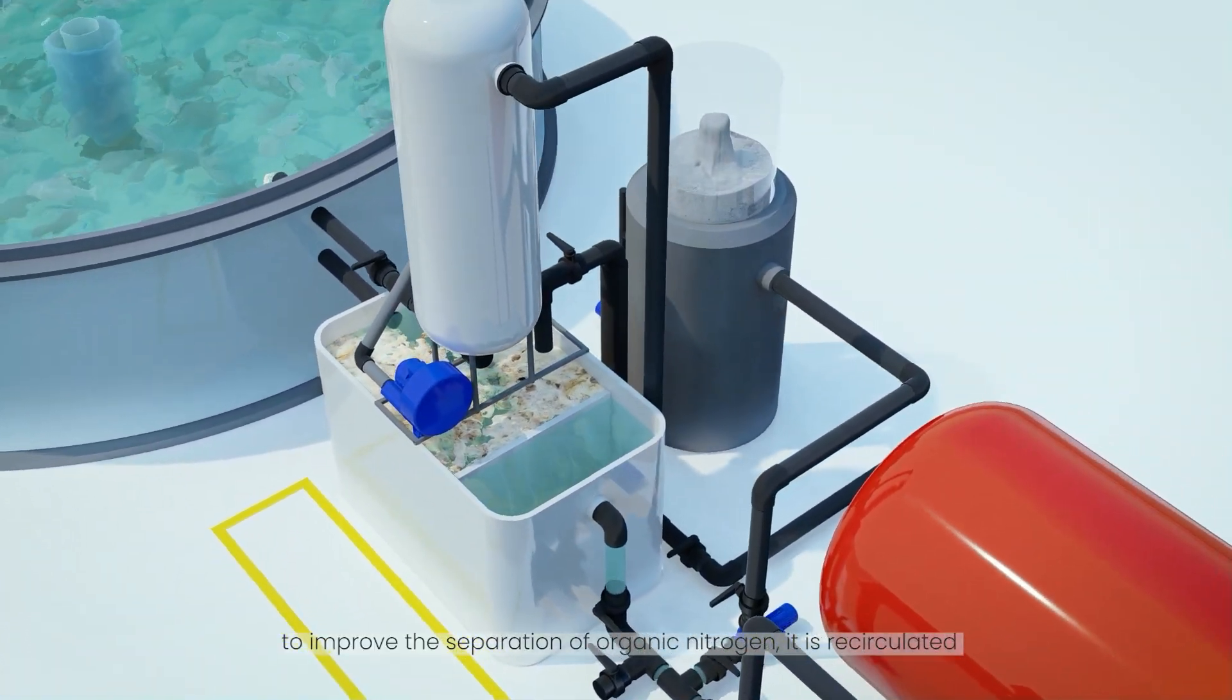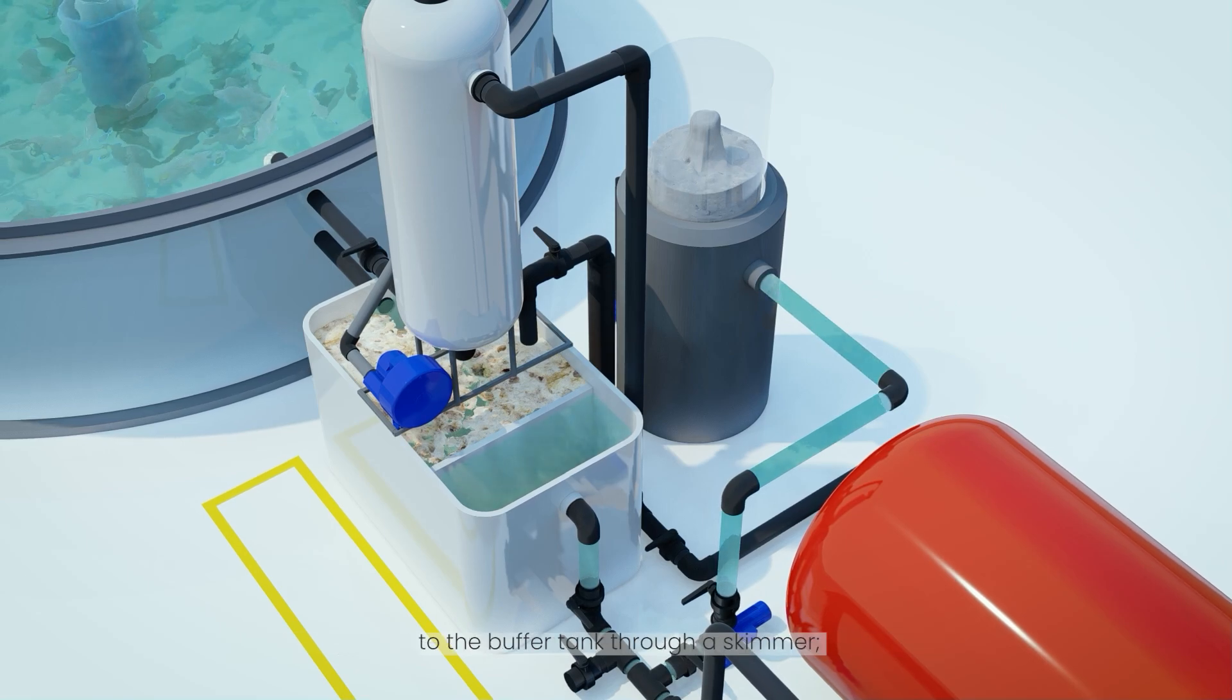To improve the separation of organic nitrogen, it is recirculated to the buffer tank through a skimmer.